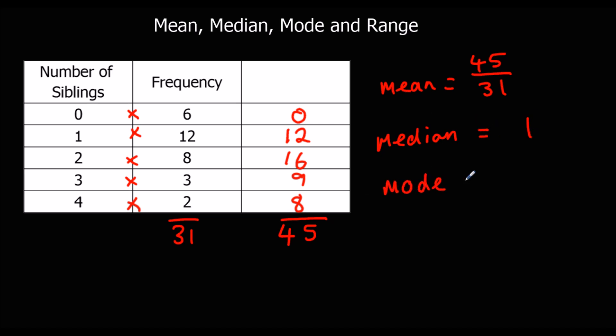The mode, the most common one, there are 6 zeros, there are 12 ones, 8 twos, so 12 ones, so the mode is 1.